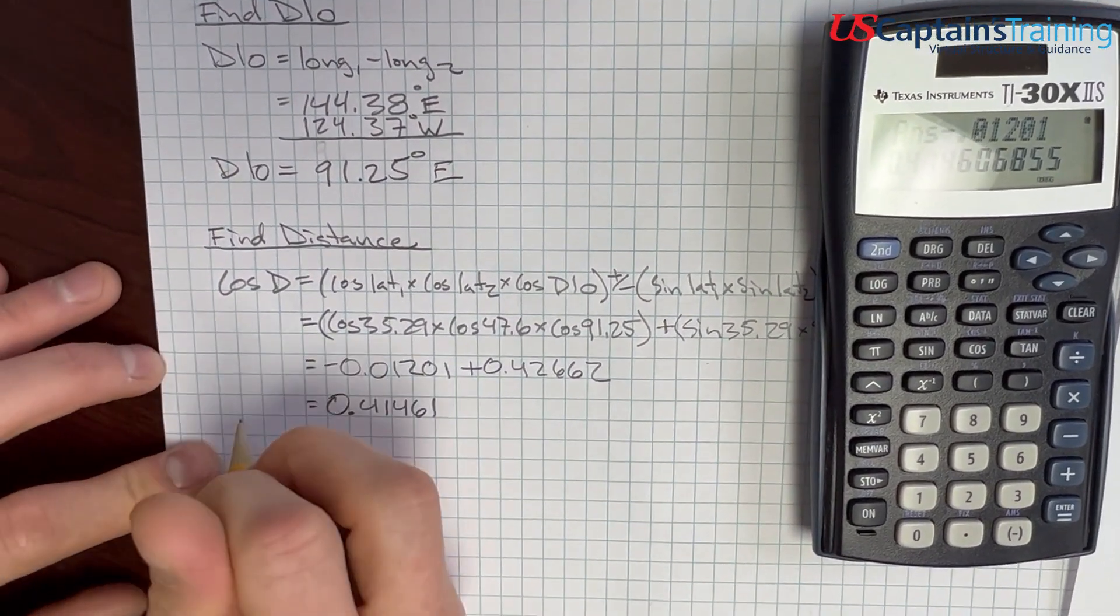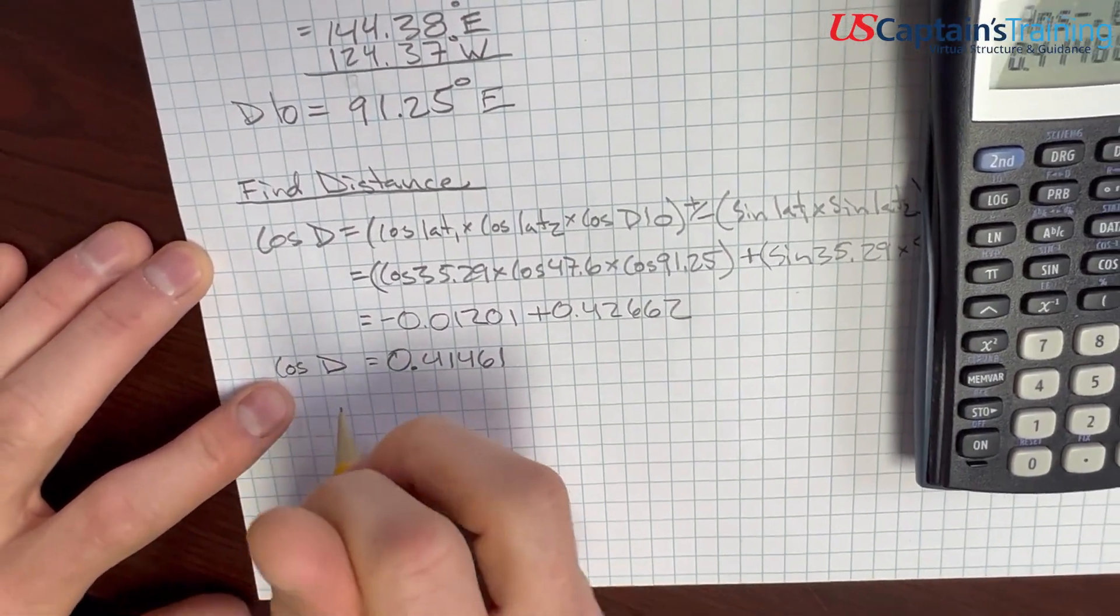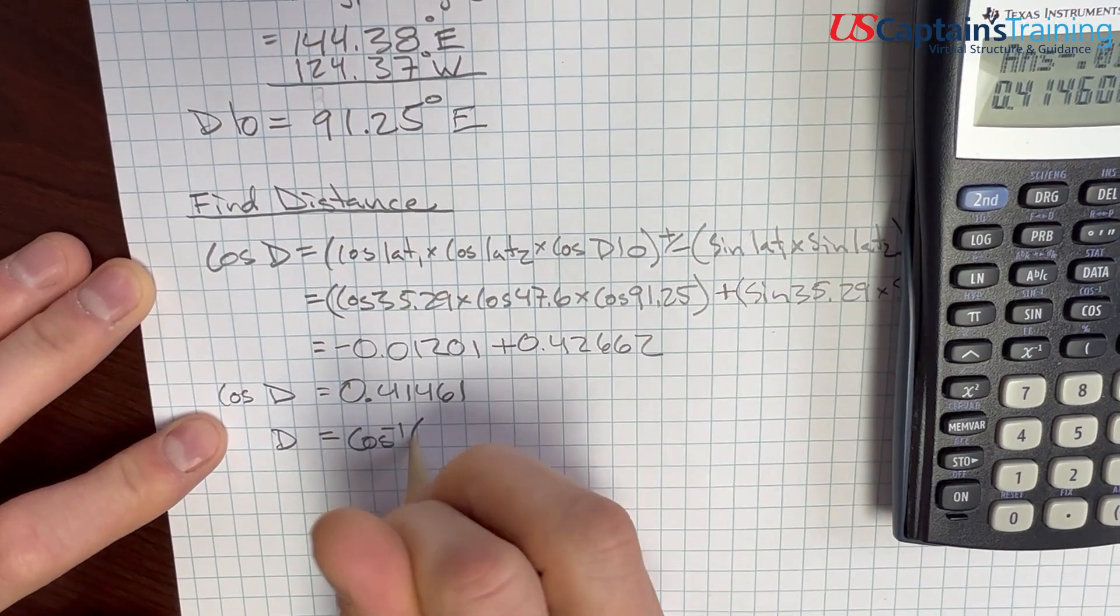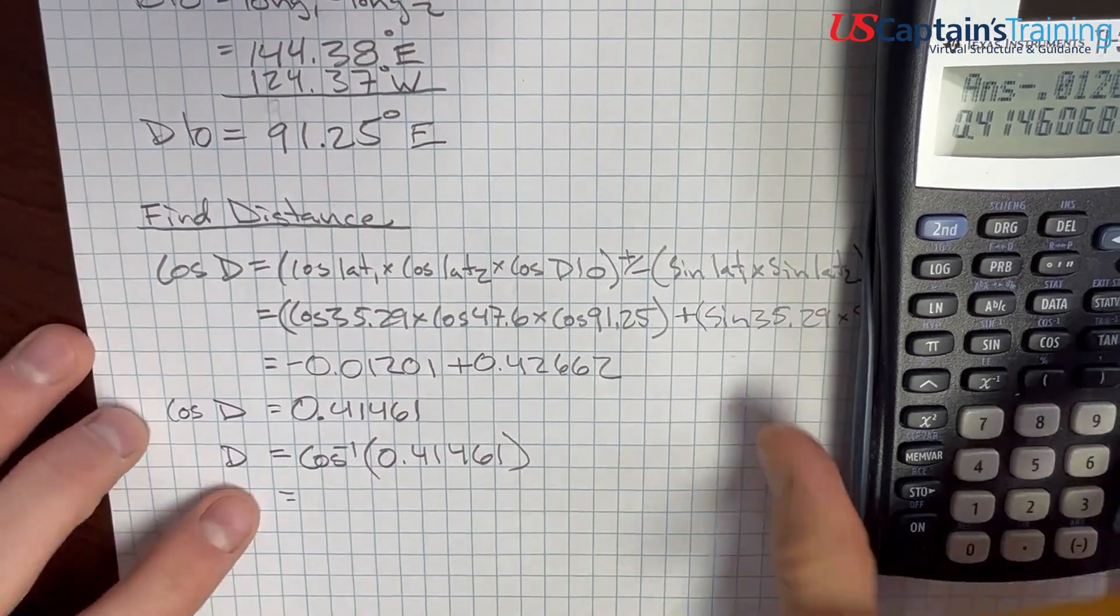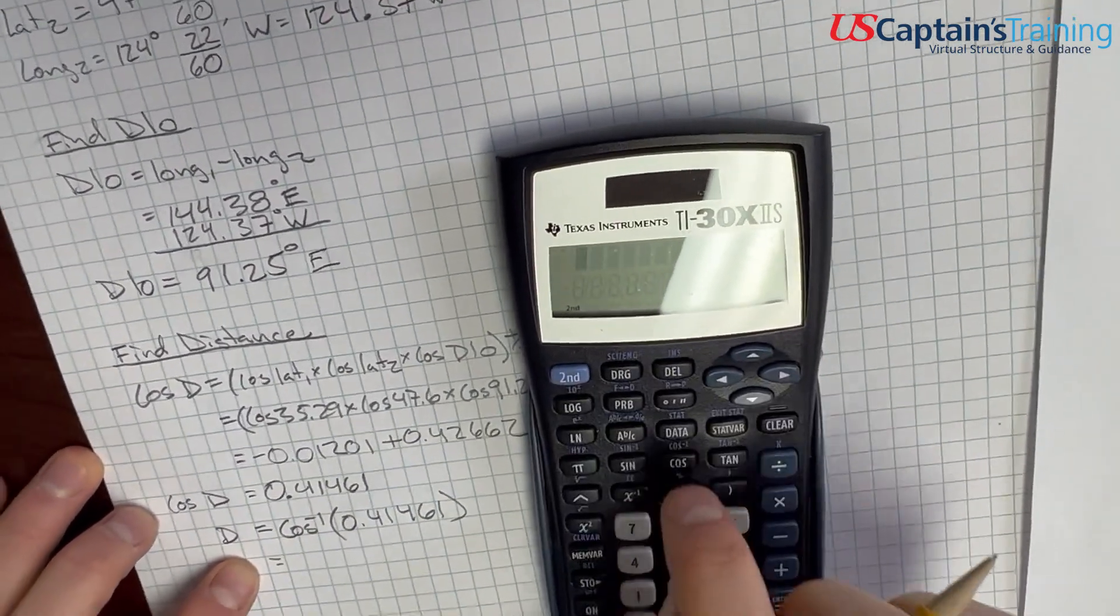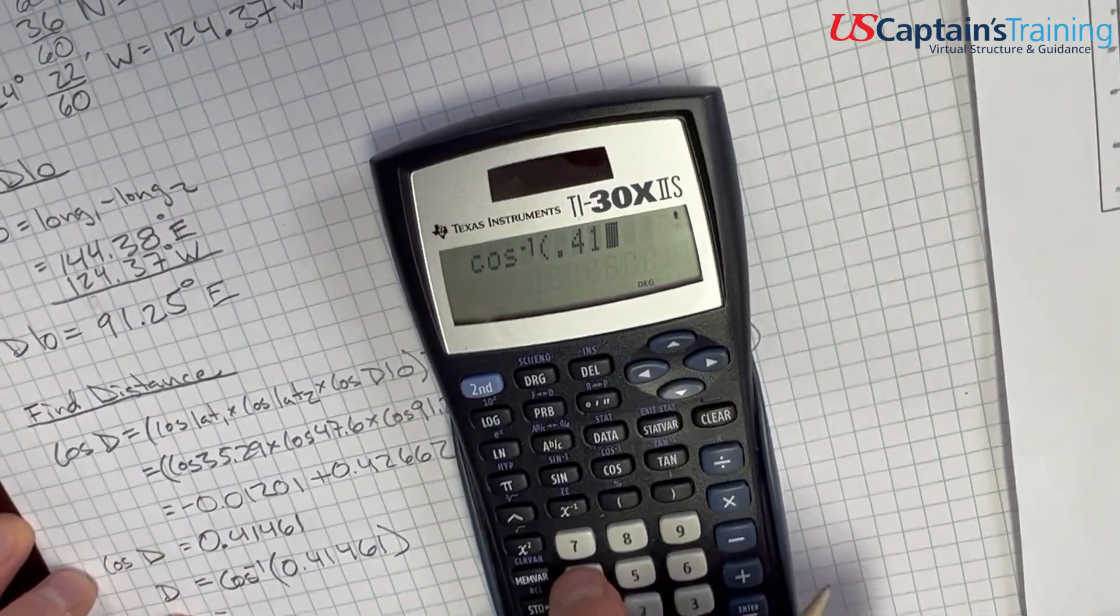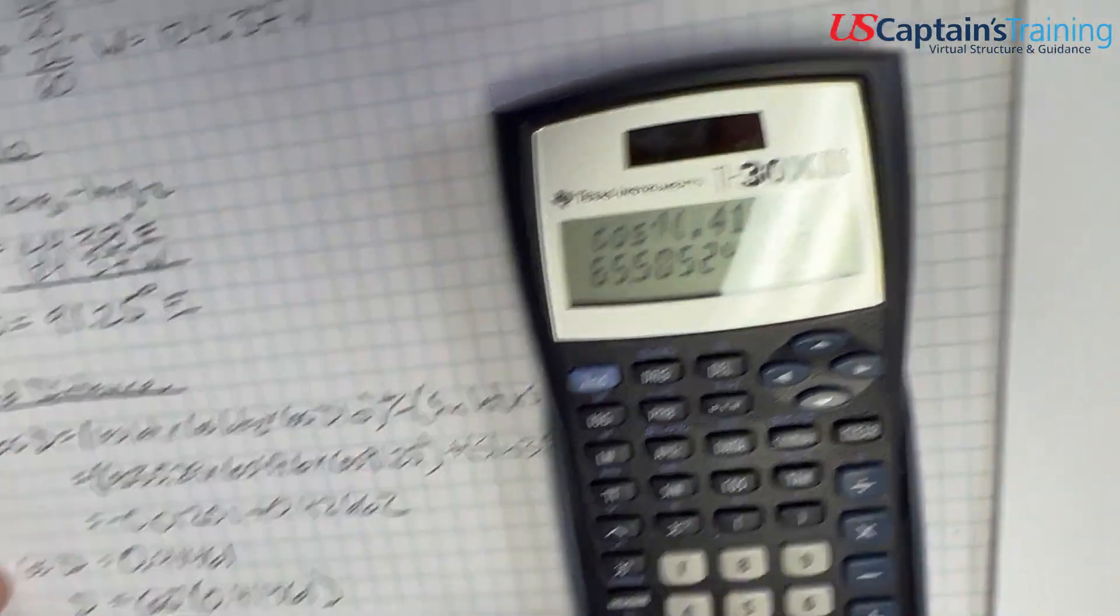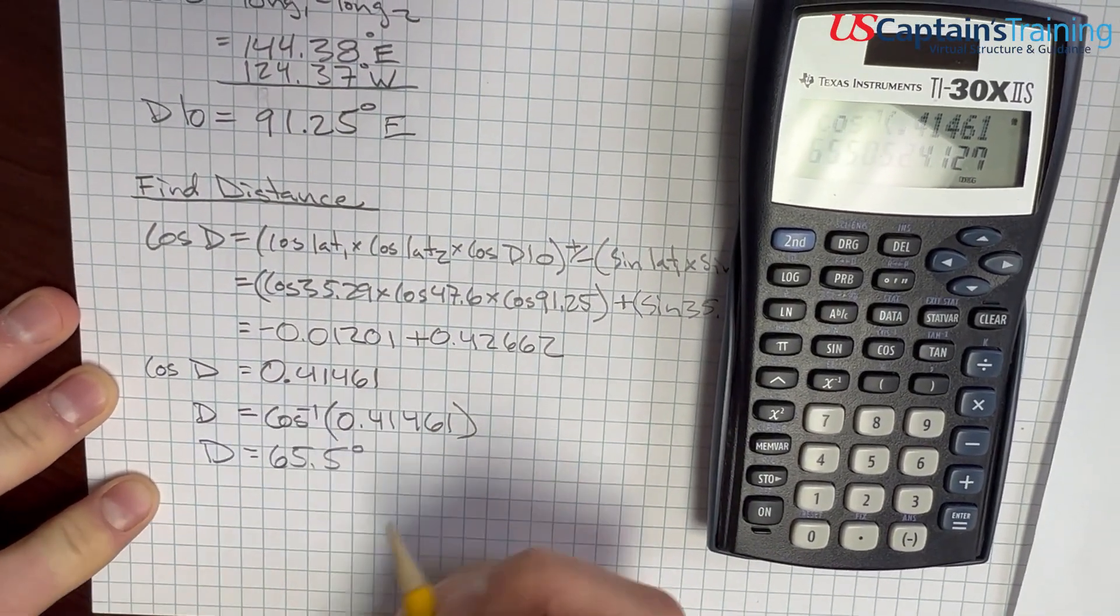Okay, so, if we look here, we say, cosine of the distance equals this. So, we need to get the cosine on the other side and just get distance. Distance equals inverse cosine of 0.41461. And this will give us our distance in degrees. So, second, inverse cosine of 0.41461 equals 65.5.